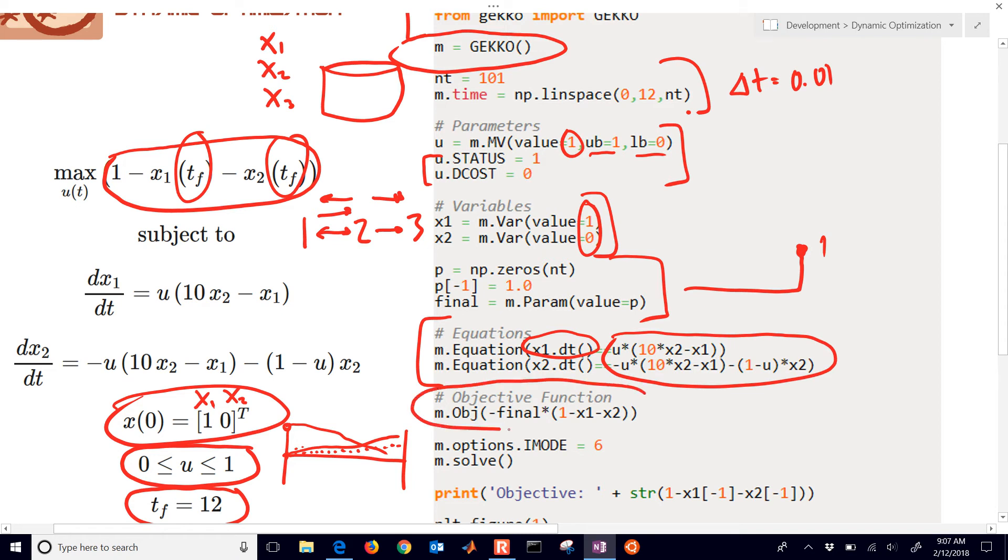Now here's my objective function. We are trying to, in this case, actually maximize the value of x3. So I have 1 minus x1 minus x2. And so that's going to be the concentration of x3. And we're just multiplying by that final parameter. So I only want to optimize x3 at the very end. And I put in the negative sign to convert the maximization into a minimization. If you multiply by negative 1, it converts it for you.